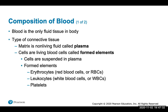Blood is the only fluid tissue in the body. The matrix is a non-living fluid called plasma, and the living blood cells are called the formed elements — the cells are suspended in the plasma. The formed elements include your erythrocytes (red blood cells), leukocytes (white blood cells associated with the immune response), and platelets, which are responsible for clotting of the blood.